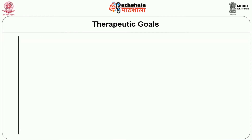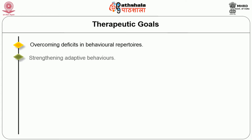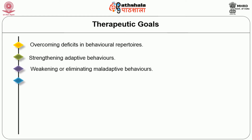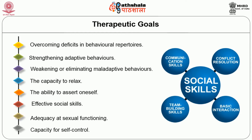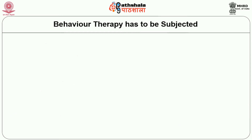Now we can see the therapeutic goals. Following is the list of behavior therapy individual goals: overcoming deficits in behavioral repertoires, strengthening adaptive behaviors, weakening or eliminating maladaptive behaviors, the capacity to relax, the ability to assert oneself, effective social skills, adequacy at sexual functioning, and capacity for self-control.